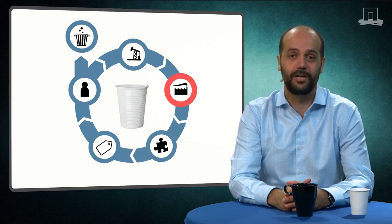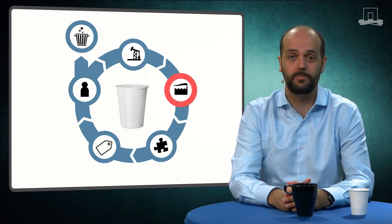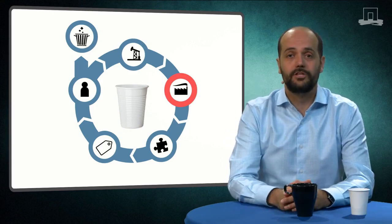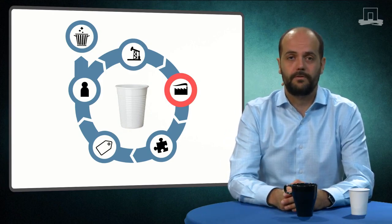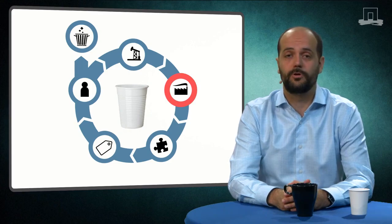In this example, LCA would allow us to see what part of the disposable plastic cup is the worst for the environment. From there, the product designers can try to improve on those hot spots.